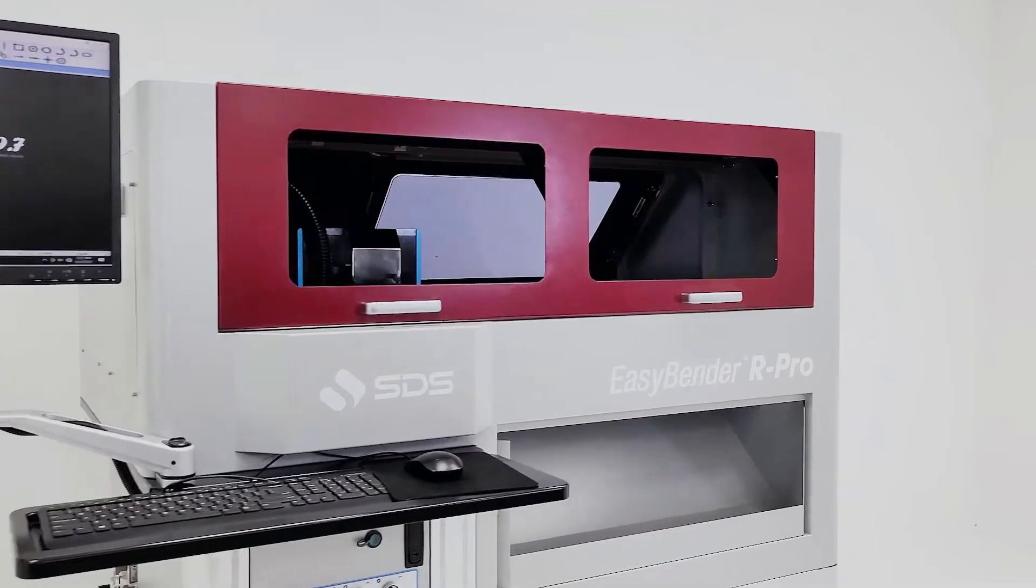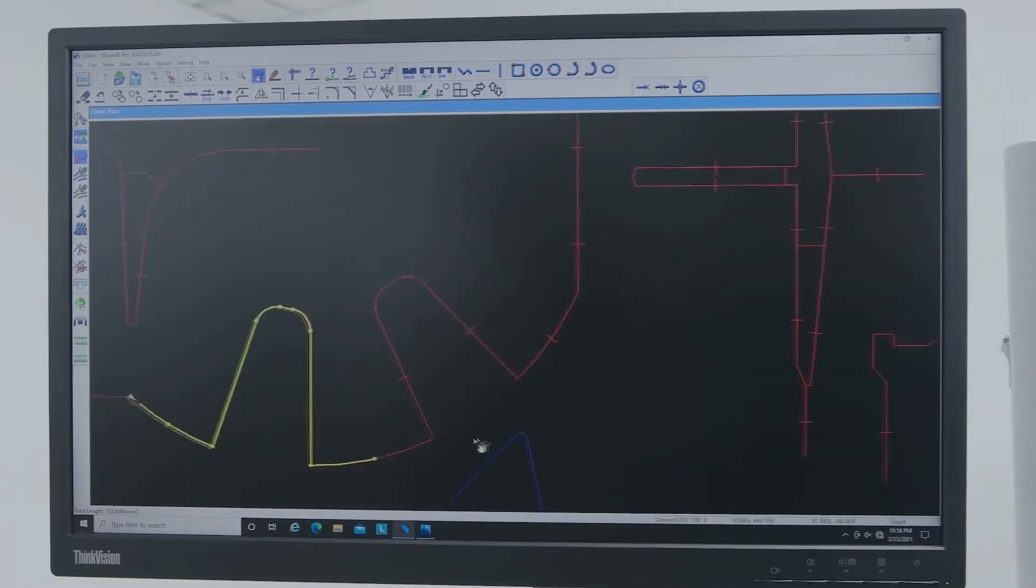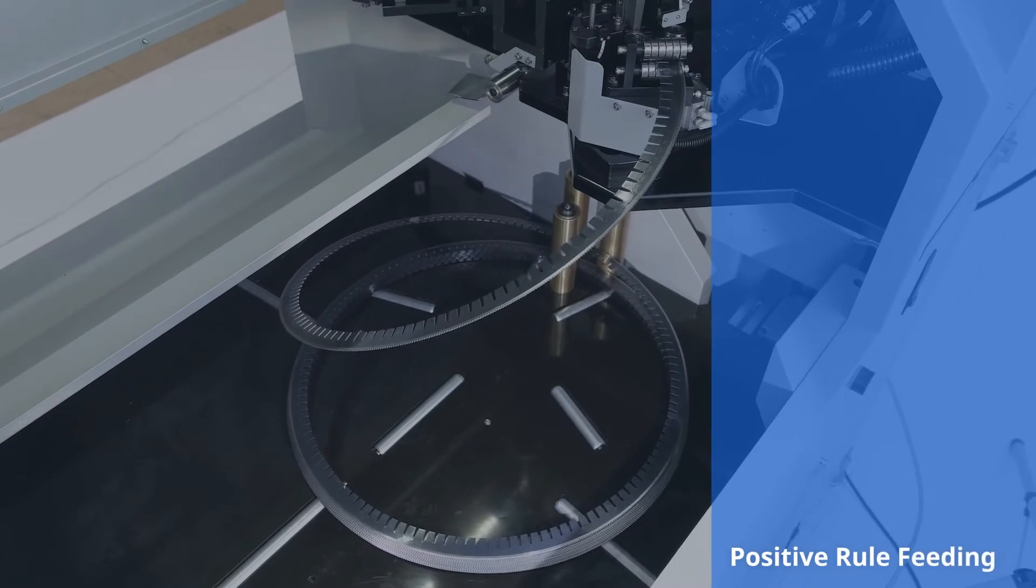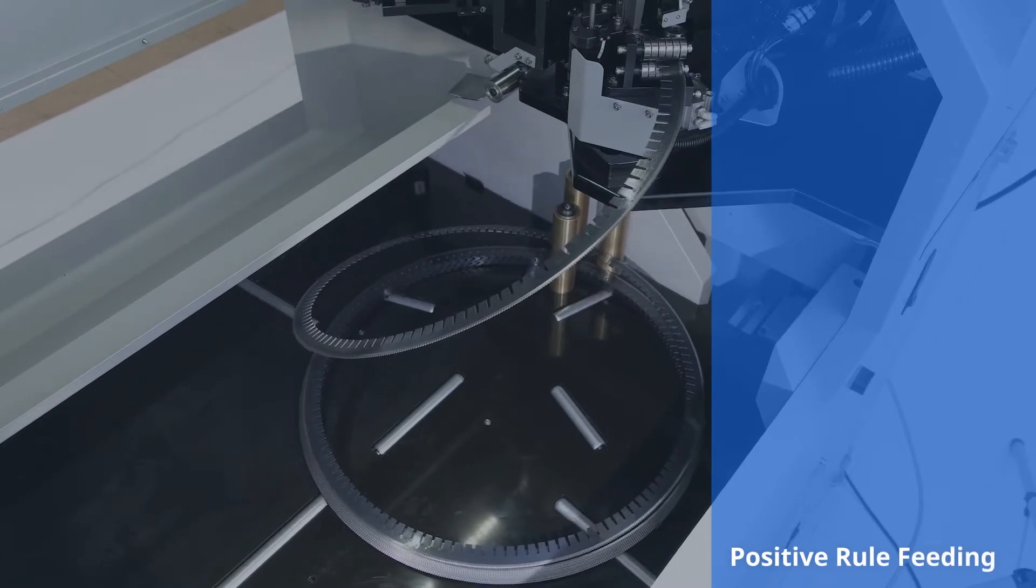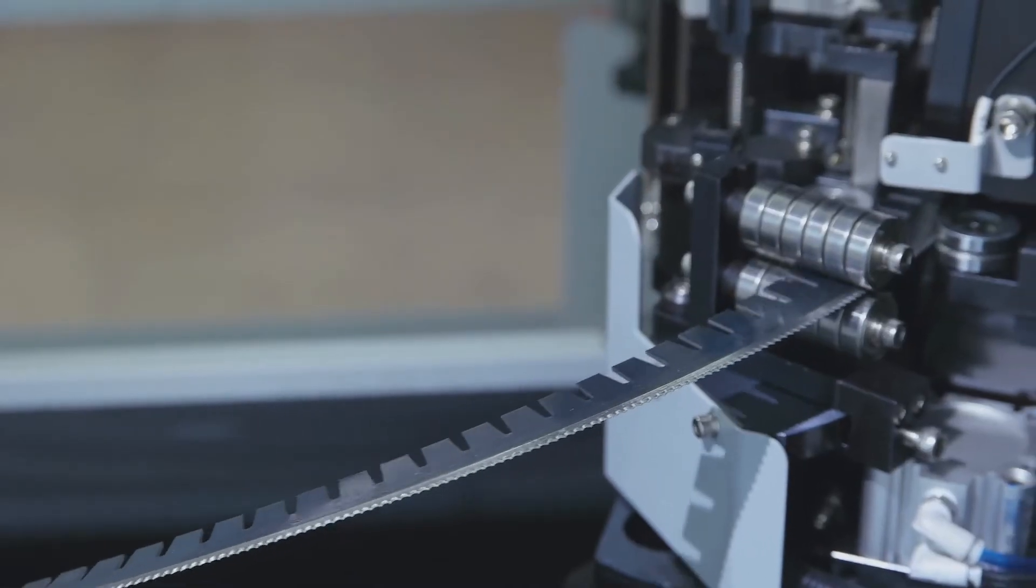EasyBender R-Pro, the multi-diameter rotary rule-bending machine. EasyBender R-Pro is designed with a dual-knurled roller feed system that allows users to produce faster and accurate pieces.